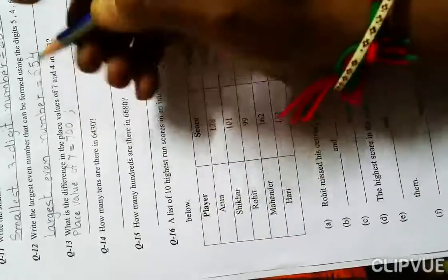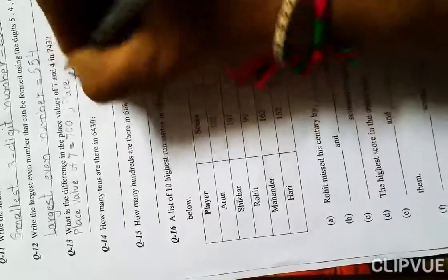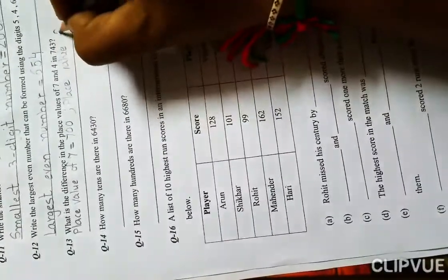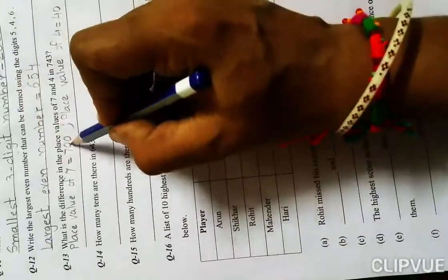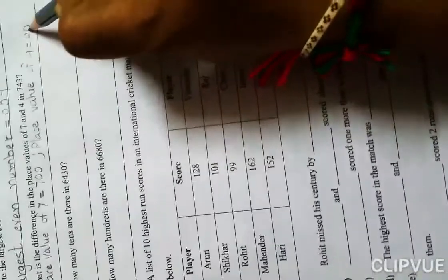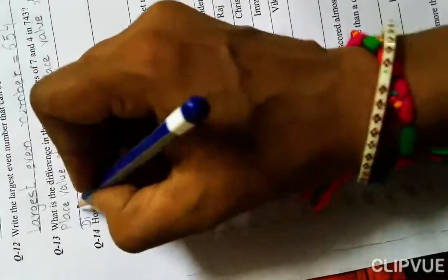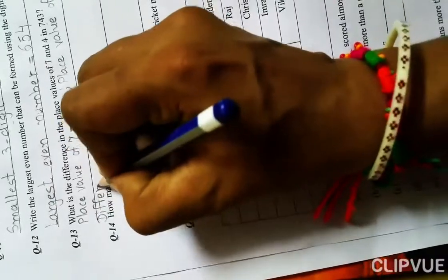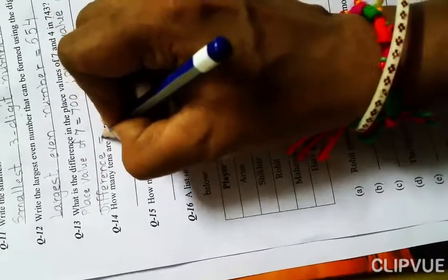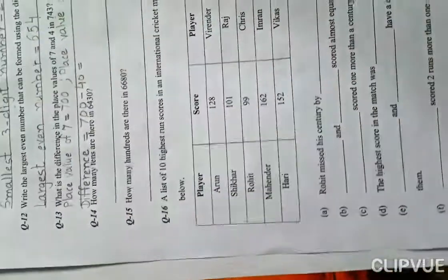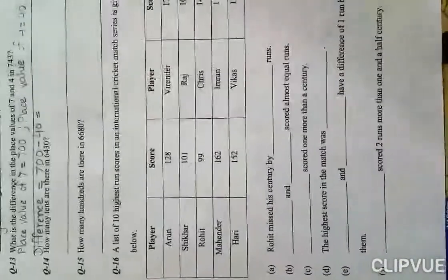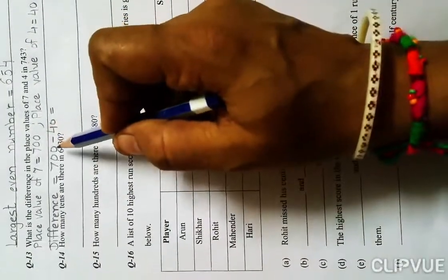Place value of 7 equals... 7 is at hundreds place, so place value of 7 is 700. Place value of 4: in the given number, 4 is at tens place, so place value of 4 is 40. Now the difference means 700 minus 40.